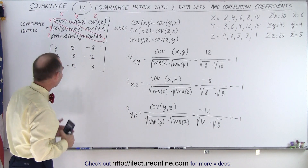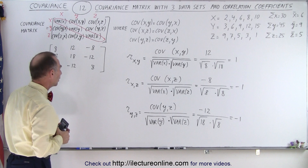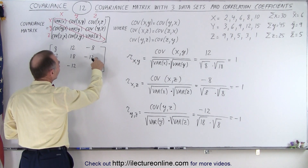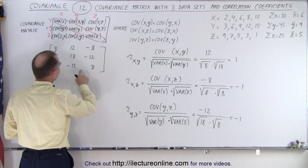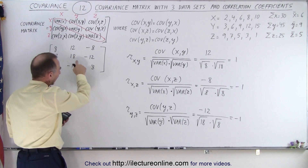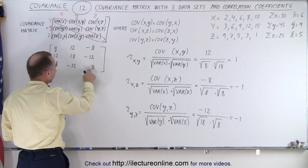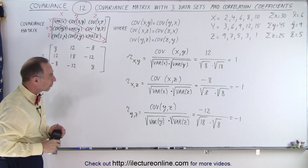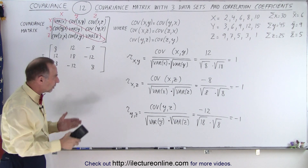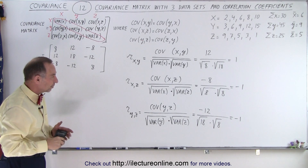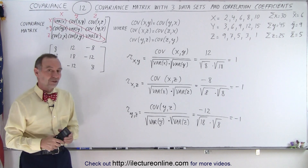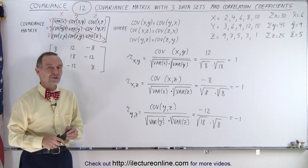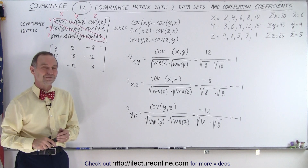Could we have seen that by looking at the covariance factors? The covariance of yz is negative 12, and the variances are 18 and 8 — that would have been difficult to see by just looking at the covariance. But calculating the correlation coefficient makes it obvious that the correlation is absolutely perfect: negative 1 and 1, perfect correlation. And that is how it's done.